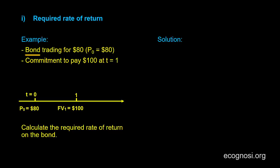So this bond is trading for $80. That is, $80 is its price, its value today, which I denote with P subscript 0. P for price and 0 for time 0.